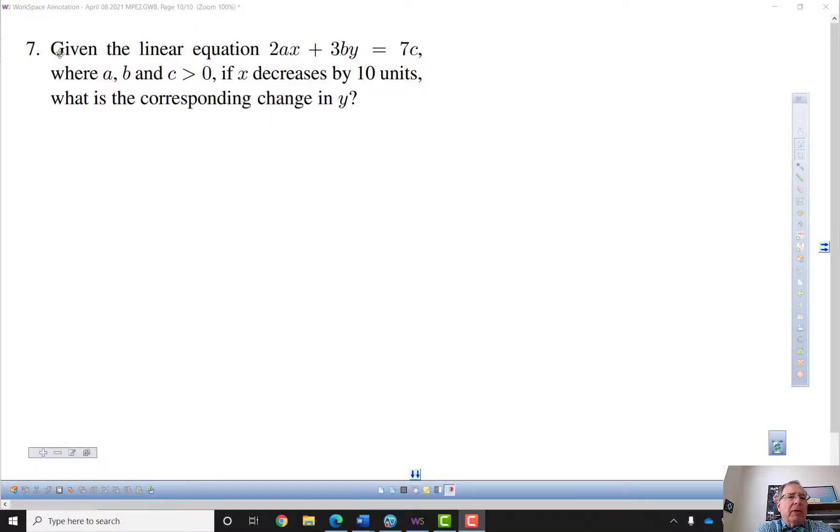Okay, number seven. Given the linear equation 2AX plus 3BY equals 7C, where A, B, and C are all greater than zero, if X decreases by 10 units, what is the corresponding change in Y?